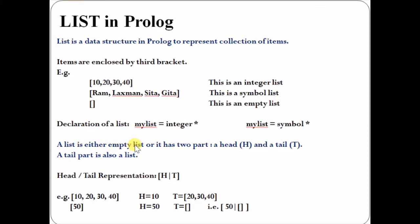A list is either empty or it has two parts: a head and a tail. The tail part is also a list. We denote it as H | T.